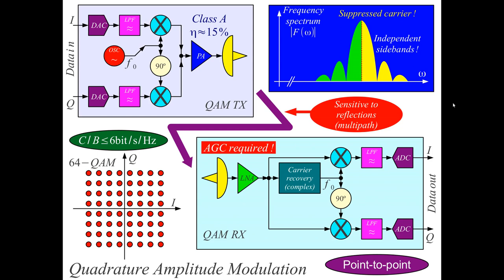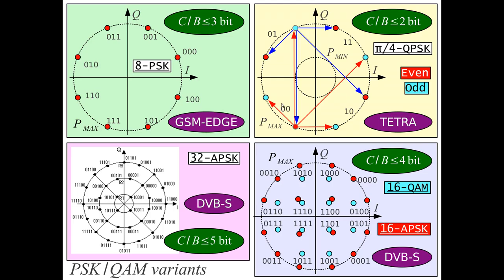Other constellation arrangements are used in practice to make best use of both spectrum and power amplifier efficiency. In GSM Edge (an improved version of GSM), 8PSK modulation is used: all symbols have the same amplitude, all phasors have the same magnitude, but three bits per symbol can be transmitted — an advantage over the two bits per symbol of QPSK. With 8PSK, arranging all phasors on a circle of equal power keeps the transmitter simple with a class C amplifier.